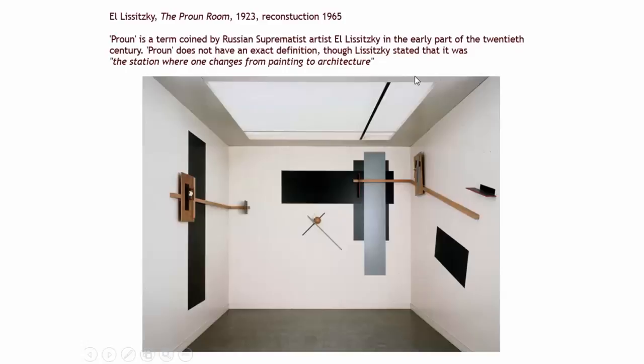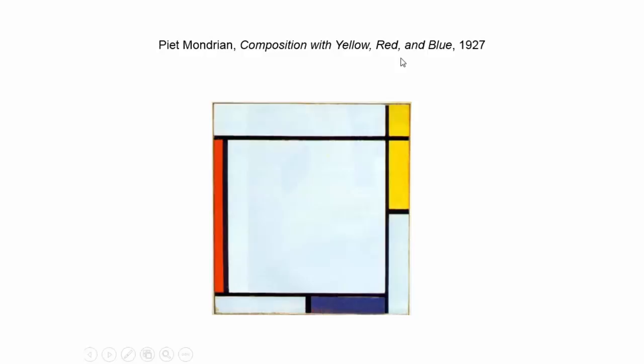Before social realism, there were suprematist artists like El Lissitzky who made spaces like the Proun Room. This is in the tradition of Malevich using geometric shapes — a reconstruction of a space at the station where one changes from painting to architecture. When they were hounded out by Stalin and the rise of social realism in the Soviet Union, they left, but their influence was pretty strong across Europe and elsewhere.